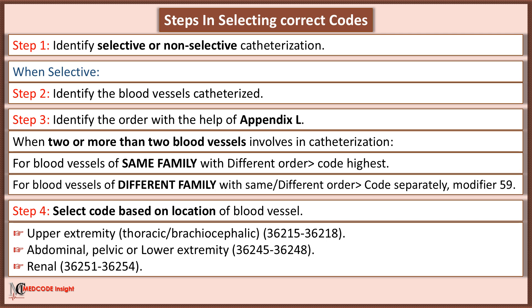Select the code based on the location of the blood vessel. For the upper extremity, thoracic, or bronchopelvic region, use code range 36215 to 36218. For the abdominal, pelvic, or lower extremity region, use code range 36245 to 36248. For the renal region, use code range 36251 to 36254.